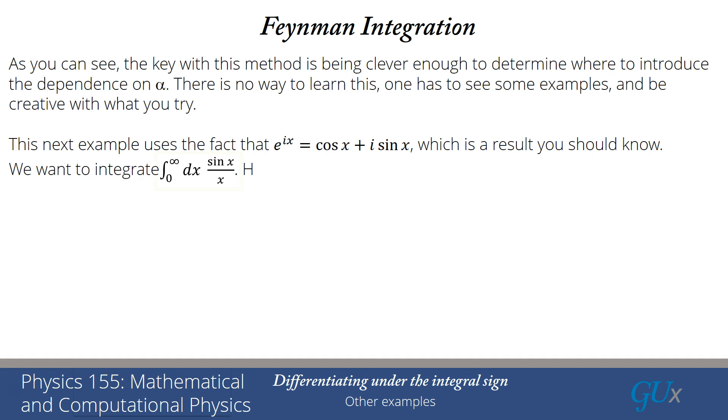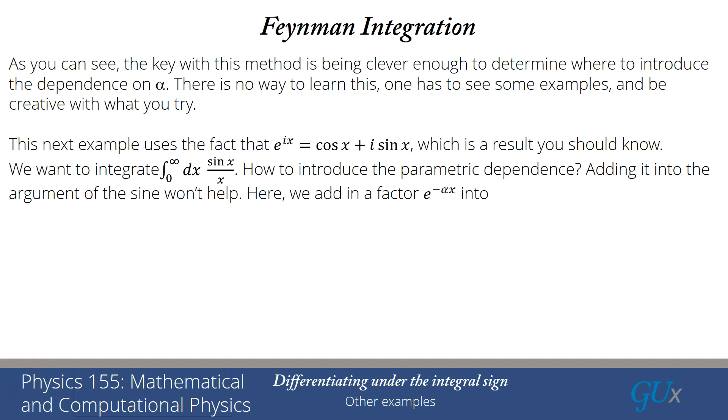The integral we want to integrate is called a sine integral, sine x over x integrated from 0 to infinity. If I look at this, it's not so clear where I put in the parametric dependence. If I add it into the argument of sine, that doesn't really help because if I then take a derivative with respect to alpha that pulls out an x, it cancels the x in the denominator, but then integral 0 to infinity of sine alpha x can't be integrated. The idea is correct - we want to do something that we can differentiate and cancel that power of x on the denominator.